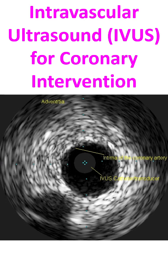Thrombus and intimal hyperplasia can be noted. A vulnerable plaque and a plaque with ulceration or rupture can also be found. Assessment of an angiographically indeterminate lesion, especially that of the left main coronary artery, is an important reason for an IVUS study. It can also give guidance for stenting in terms of stent apposition and expansion, and can delineate intramural hematoma and dissection.